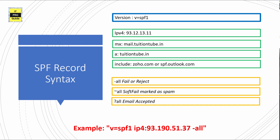Next is SPF record syntax. Let us split the SPF string into three portions. The first portion is 'v=spf1' — that is the version, which is common for all servers. In the second portion, you can specify the IP address of your mail server, the MX record, or indicate that any email server sending with TuitionTube.in should be accepted. Or if you are using Office 365, Zoho, or any other third-party email provider, put 'include' followed by their SPF domain address.